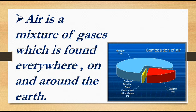The proportion of nitrogen gas in the air is around 78%, whereas oxygen is present in around 20%. Carbon dioxide, water vapor, and other gases are present in the proportion of 1%.